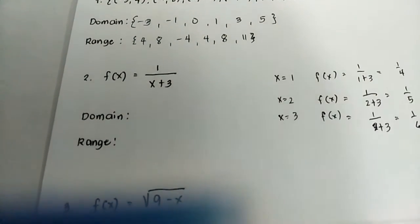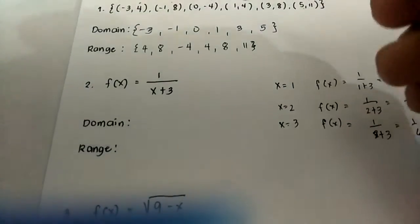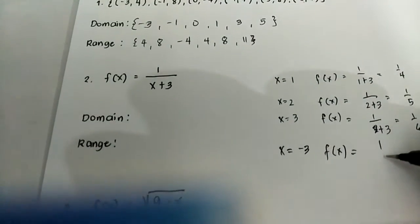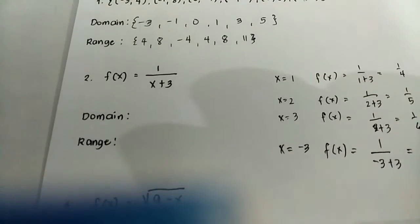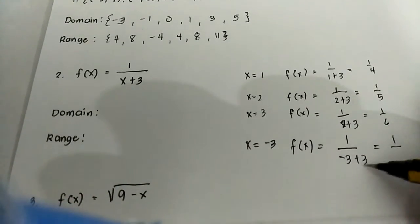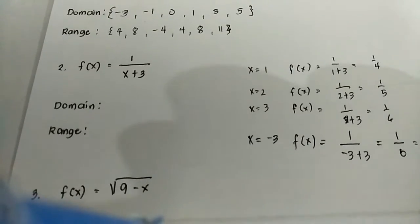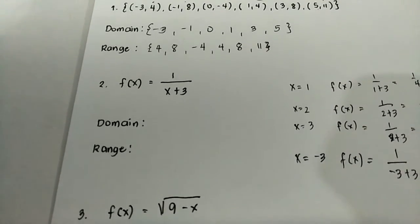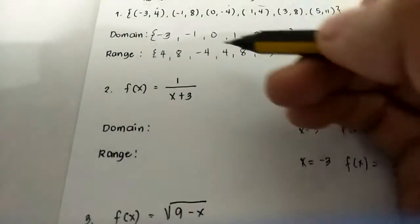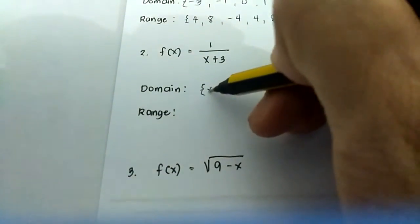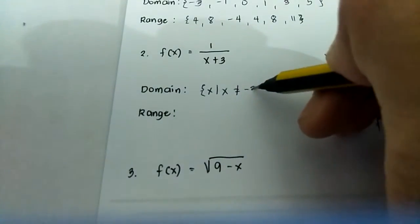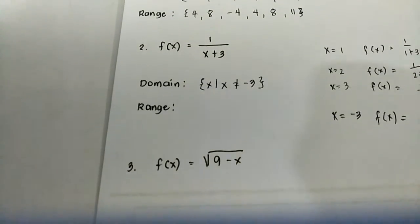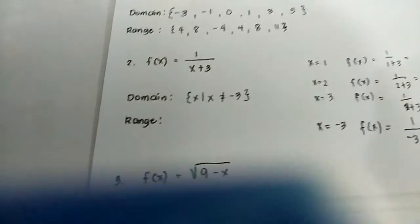This is where we will have a problem with our function. If x equals negative three, the function becomes one over negative three plus three, which is one over zero — that is undefined. So x must not be negative three. We can write the domain as: x such that x is not equal to negative three, to avoid making the function undefined.